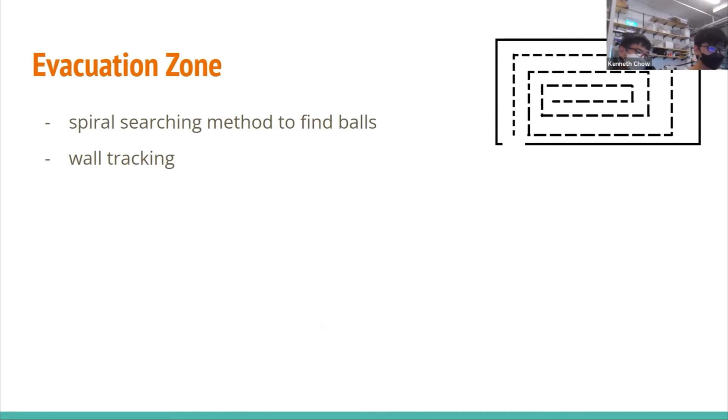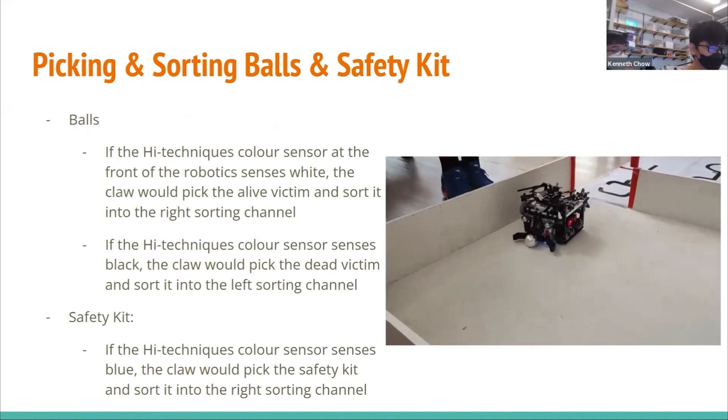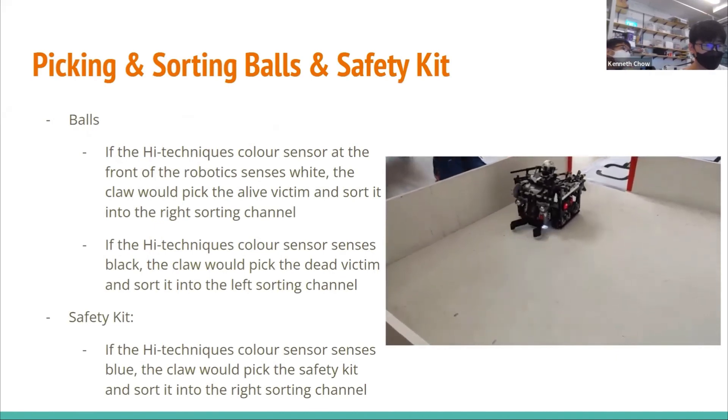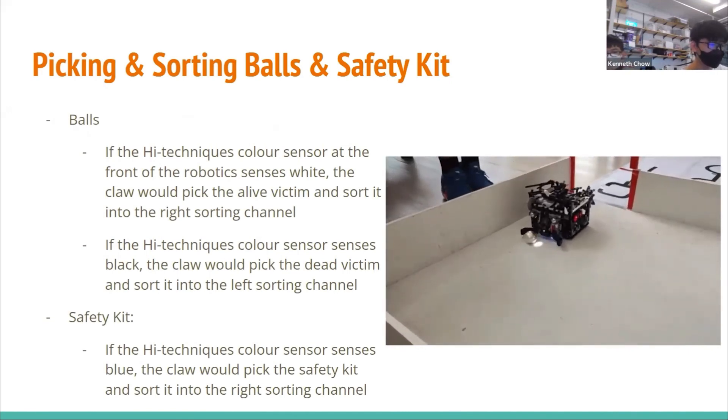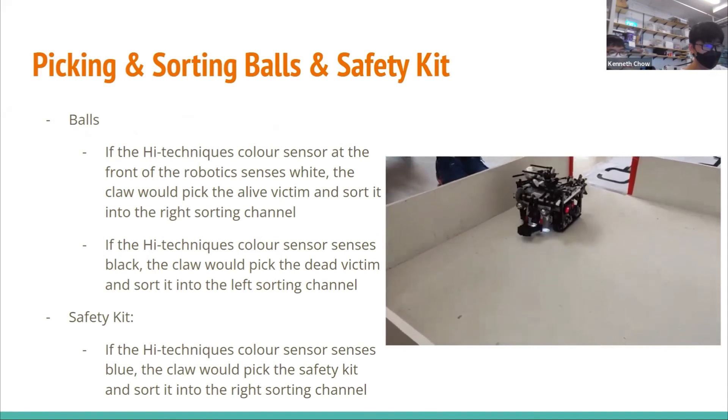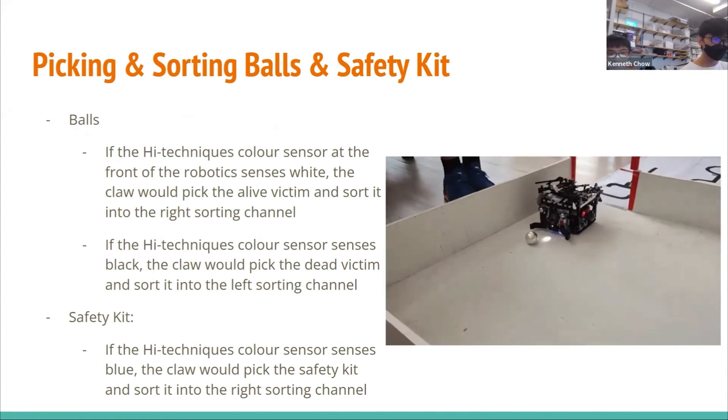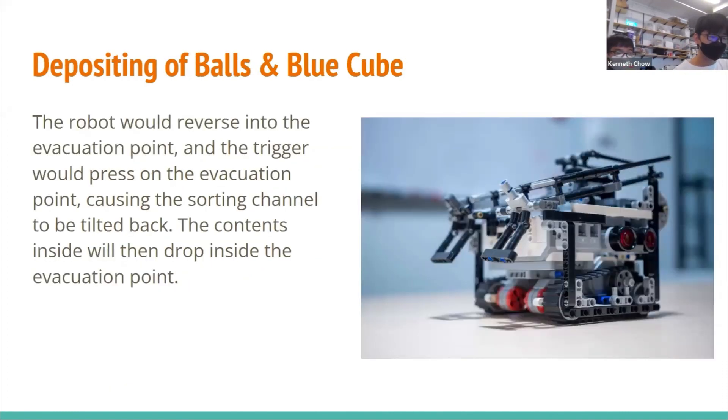Next, we'll be talking about the evacuation zone. Despite us not having been able to do this in the preliminary rounds due to unfinished code, we will still share our idea. Our idea was that the robot uses spiral searching to find the wall. In spiral searching, the robot will move around in spiral waves by maintaining a certain distance from the wall using ultrasound sensors. This is the same as how we did obstacle avoidance. The robot will pick balls up as it moves. The robot will check for evacuation points in each corner of the evacuation zone. If one is present, the balls will be deposited. If the sensor senses white in front of it, it will take the alive victim up and sort it into a sorting channel. If the sensor senses black, it will pick the dead victim up and sort it into a sorting channel. The way we deposit the balls and cubes is through a trigger mechanism, where when the trigger is triggered, the storage shifts backwards allowing them to fall.